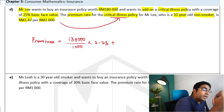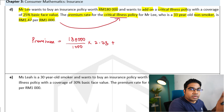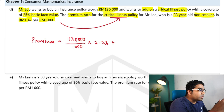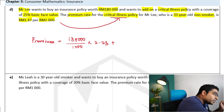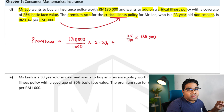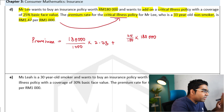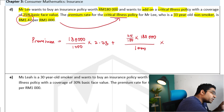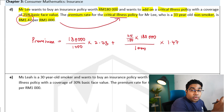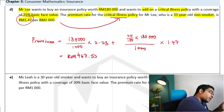He has also added on the critical illness policy, so we add the critical illness premium. The critical illness policy is 25% of the basic face value, so we apply the same formula: 25/100 times 180,000 gives the face value for the critical illness policy. We then divide by 1,000 and multiply by the rate for critical illness, which is 1 ringgit and 47 cents. The total annual premium is RM467.55.